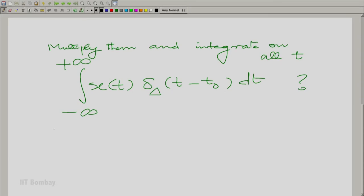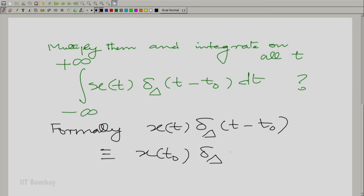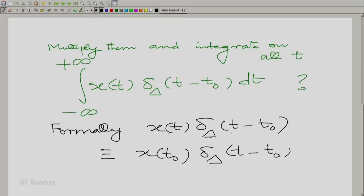In other words, what I am saying formally in mathematical language is formally xt times delta delta t minus t0 is almost equivalent to x of t0 delta t minus t0. Now, you know you must appreciate what I am saying here. The two sides of the equation here, I am talking about this equation here. Xt into delta t minus t0 is equal to or is equivalent to x of t0 times delta delta t minus t0.